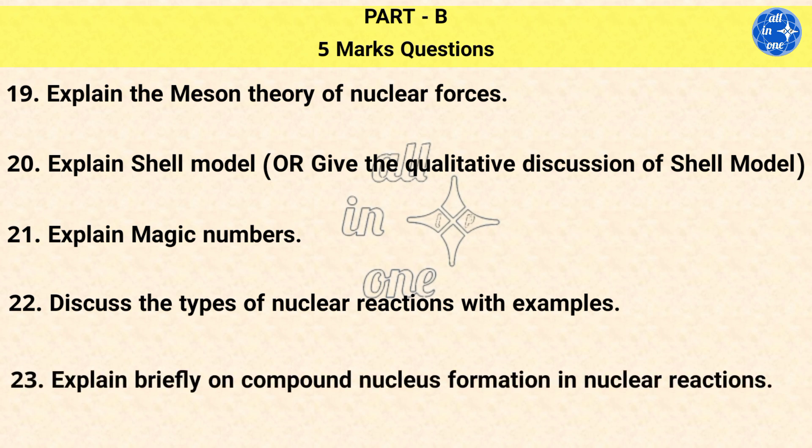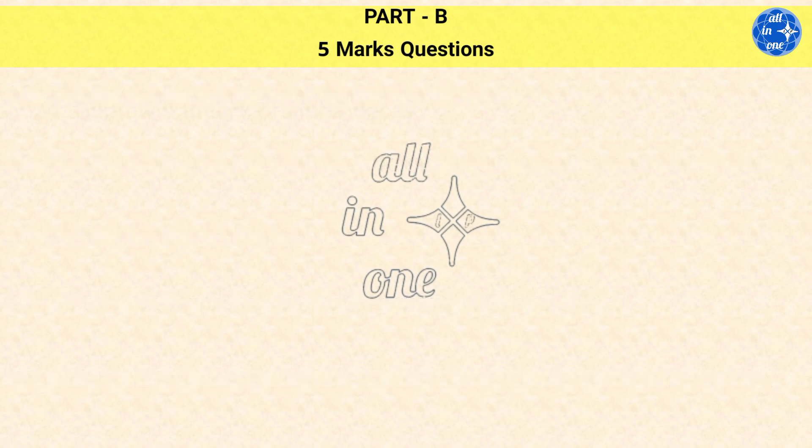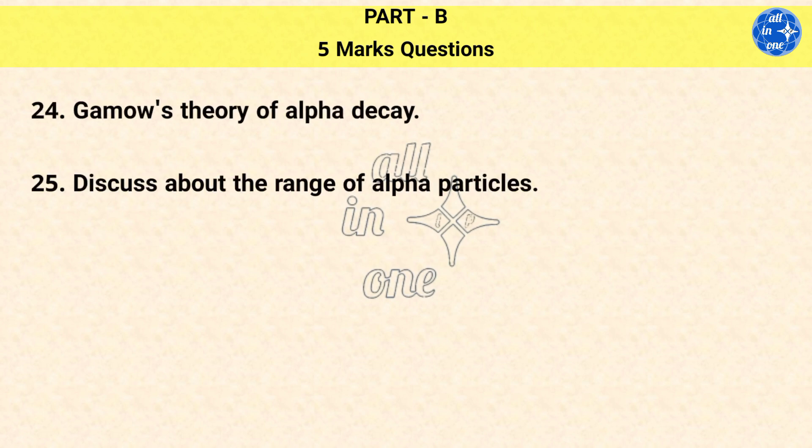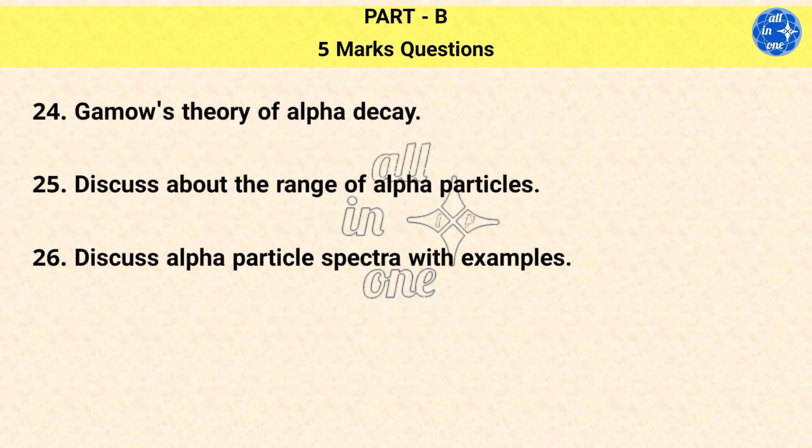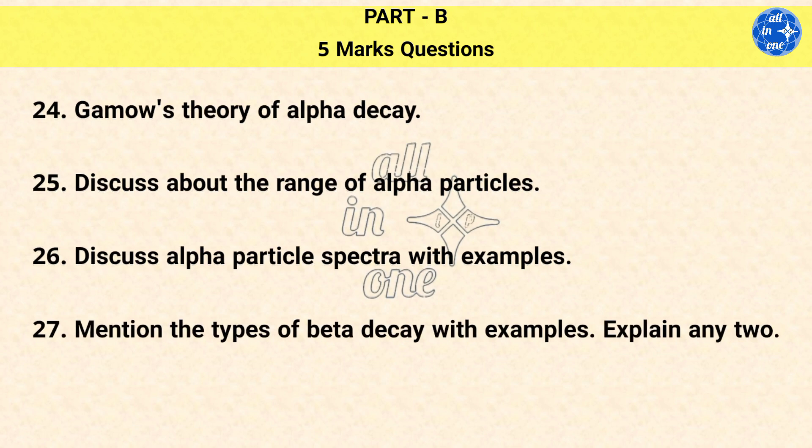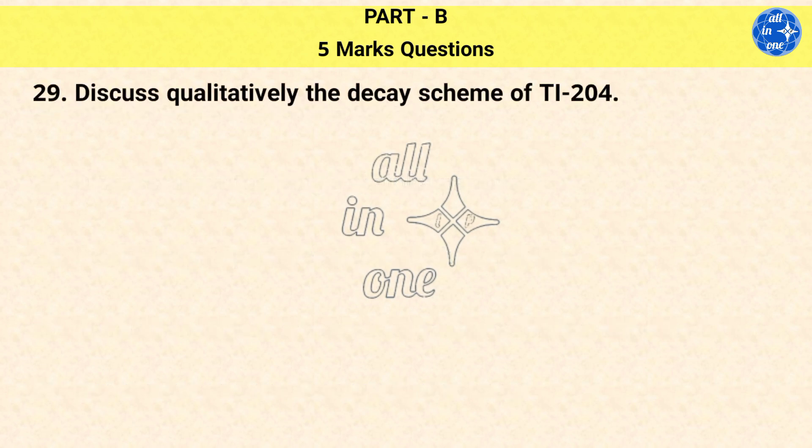Question 23: Explain briefly on compound nucleus formation in nuclear reactions. Question 24: Gamow's theory of alpha decay. Question 25: Discuss about the range of alpha particles. Question 26: Discuss alpha particle spectra with examples. Question 27: Mention the types of beta decay with examples. Question 28: Explain the neutrino theory of beta decay.